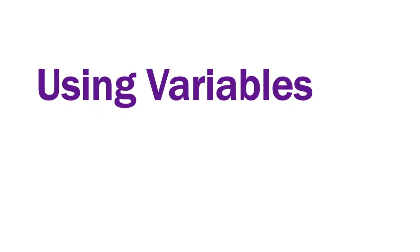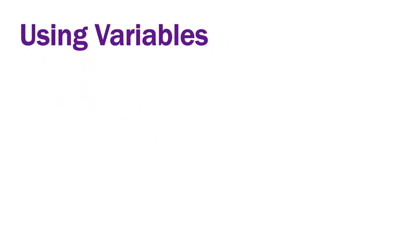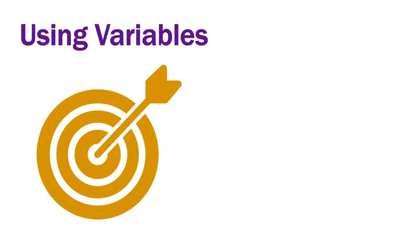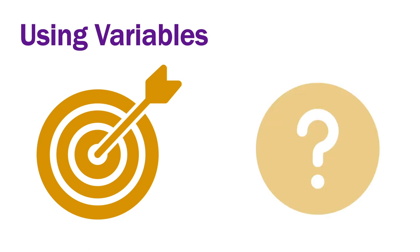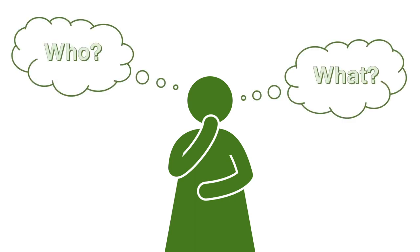The variables in Vividata are used to define your target market — the people who you want to find out more about. The variables are also used to define what it is you want to know about your target market. These are two important pieces of information to keep in mind: Who is it that I want to study? And what do I want to know about them?